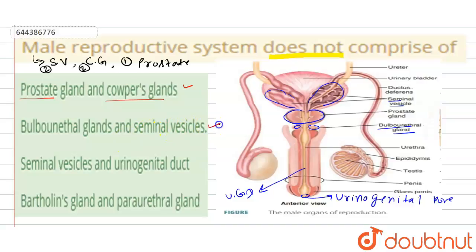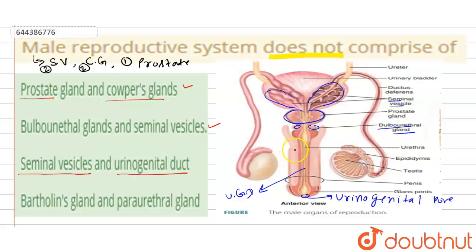The next option is seminal vesicle and urino-genital duct. The seminal vesicle is the male reproductive accessory gland which secretes fluid for semen, and the urino-genital duct carries both urine and semen at different times, not at the same time. So this is also true for the male reproductive system and not the answer.